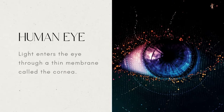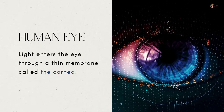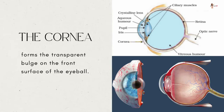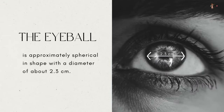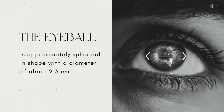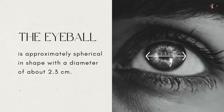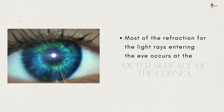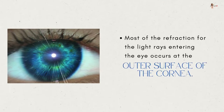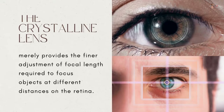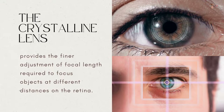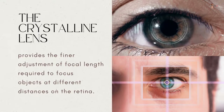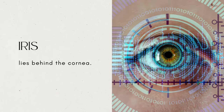Light enters the eye through a thin membrane called the cornea. It forms the transparent bulge on the front surface of the eyeball. The eyeball is approximately spherical in shape with a diameter of about 2.3 centimeters. Most of the refraction for the light rays entering the eye occurs at the outer surface of the cornea. The crystalline lens merely provides the finer adjustment of focal length required to focus objects at different distances on the retina.